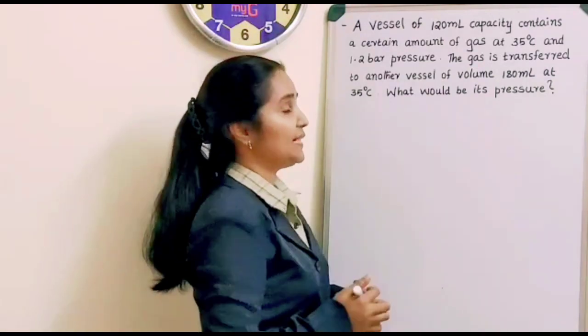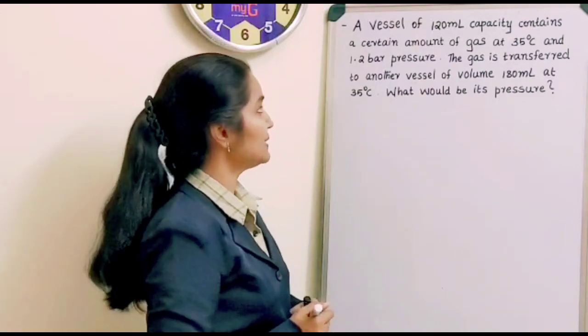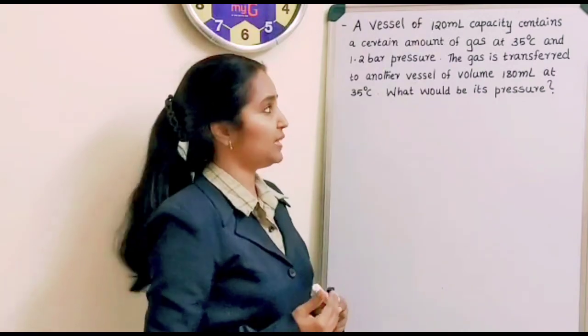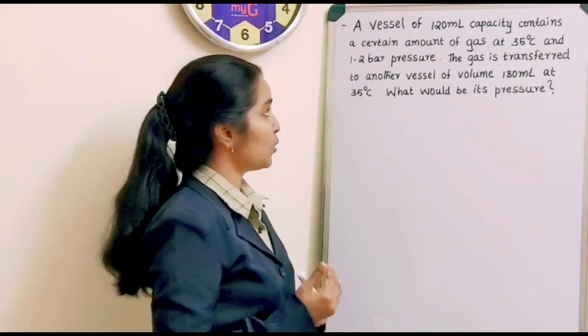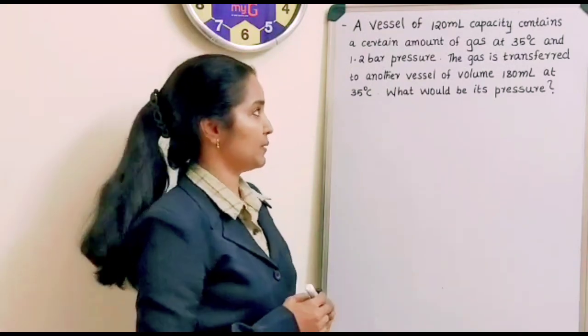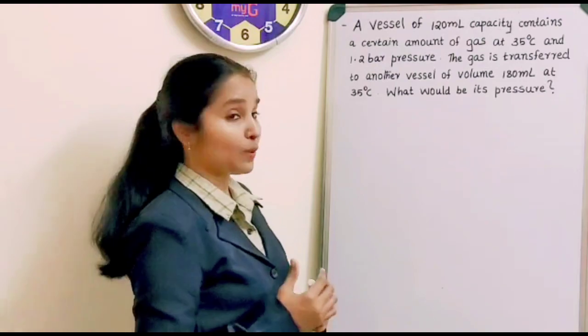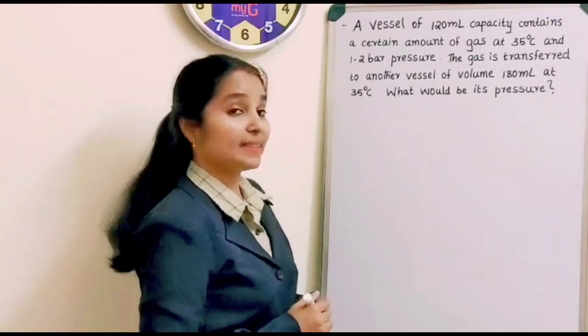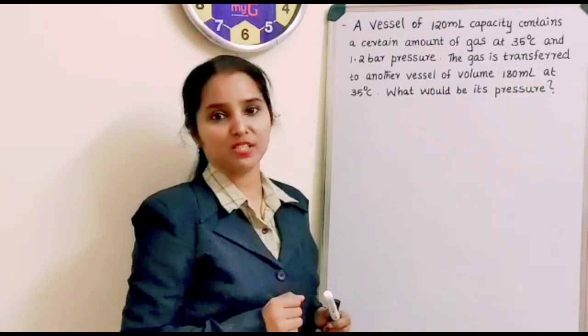A vessel of 120 ml capacity contains a certain amount of gas at 35 degree Celsius and 1.2 bar pressure. The gas is transferred to another vessel of volume 180 ml at 35 degree Celsius. What would be its pressure?